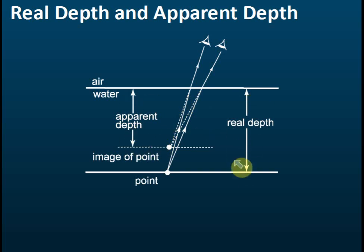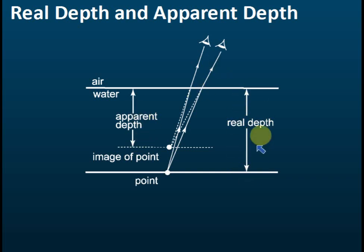The actual depth is called the real depth. So what you see is called the apparent depth, and the actual depth is called the real depth. You will always find that the apparent depth is less than the real depth.